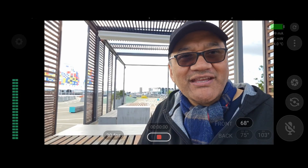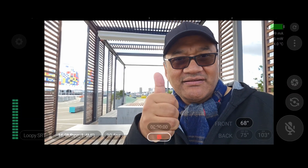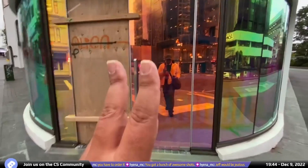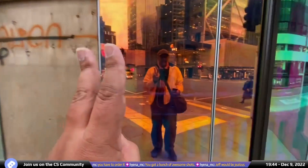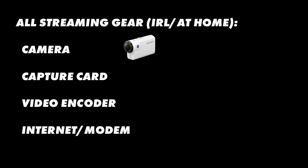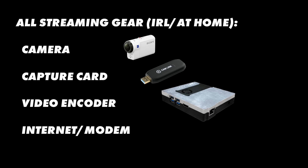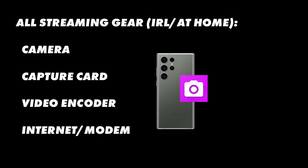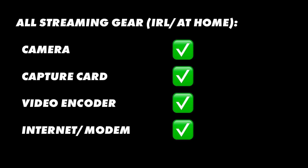An IRL live streamer has the exact same core parts — their IRL gear is basically a mobile computer. For example, an IRL backpack: I'd have a Sony AS300, Elgato capture card, Belabox, and a Nighthawk. And all I need for my phone is an app like IRL Pro. Same core parts.